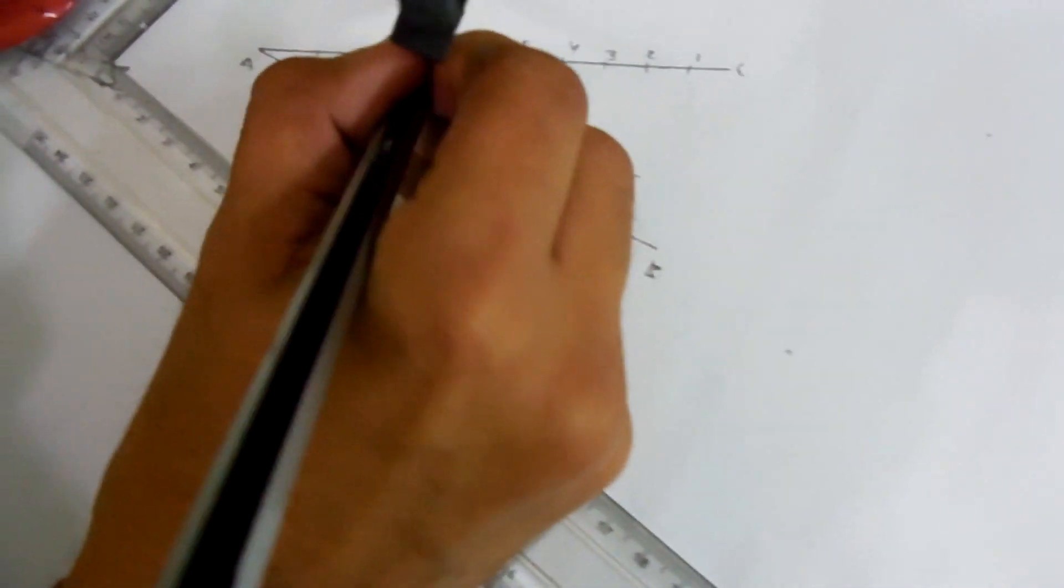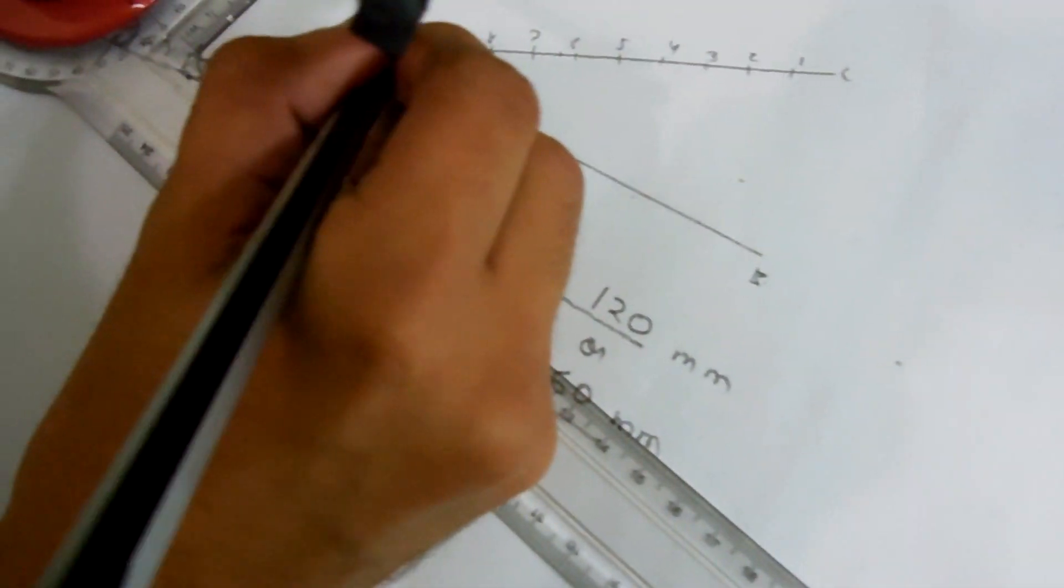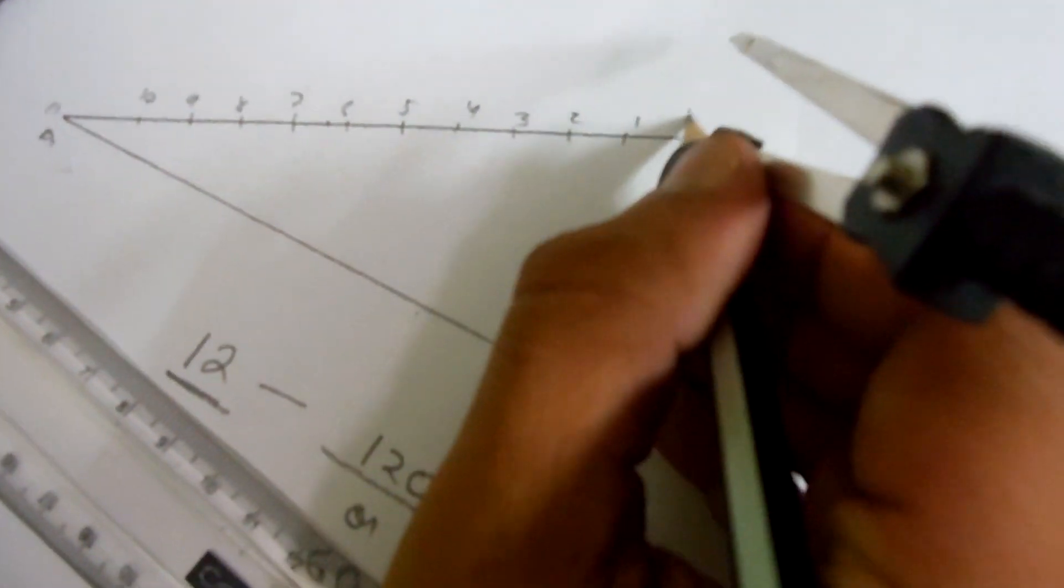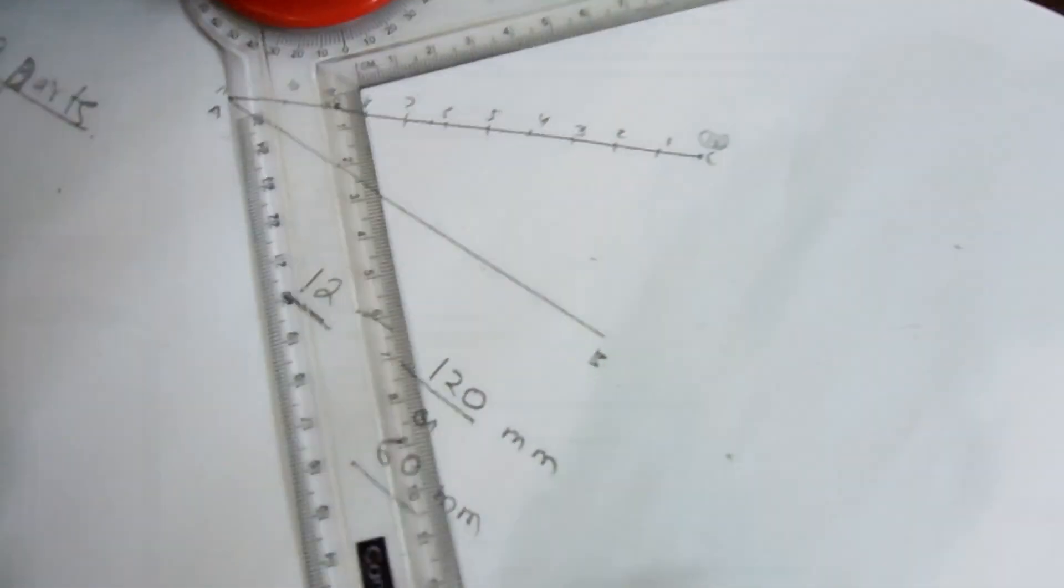1, 2, 3, 4, 5, 6, 7, 8, 9, 10, 11, and this one is 12. We are joining 12 with B.